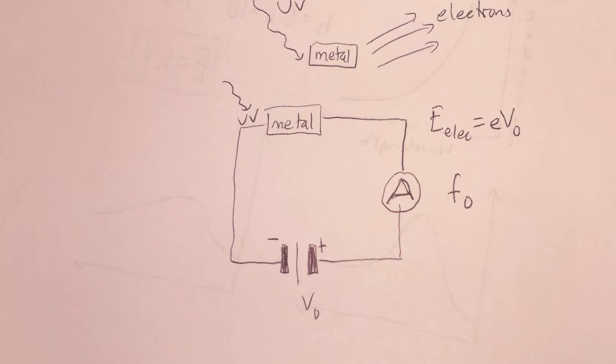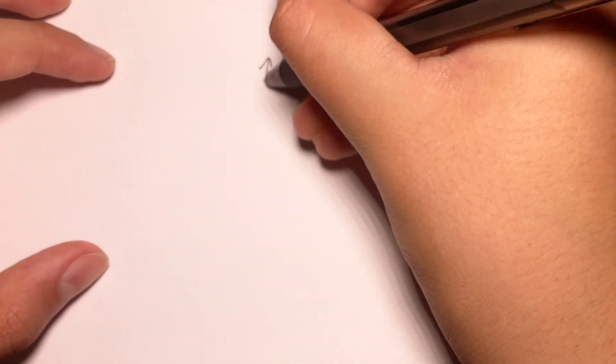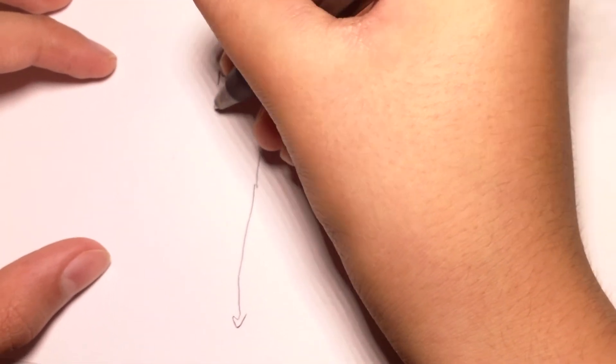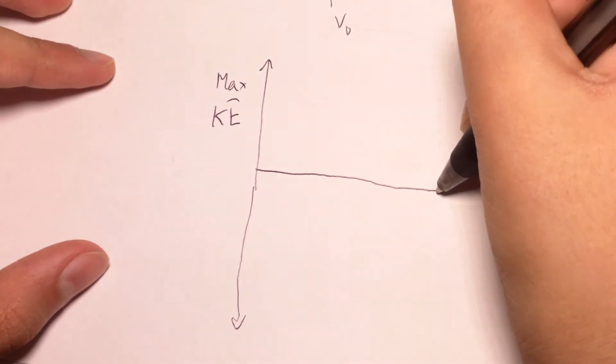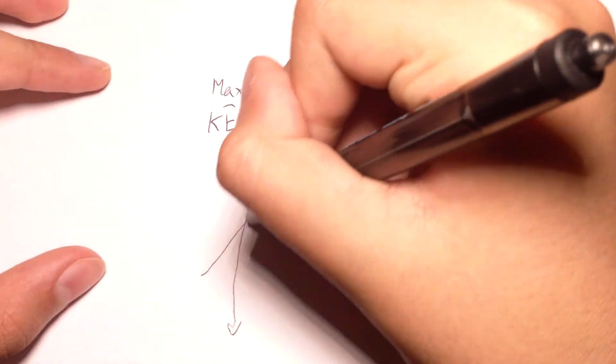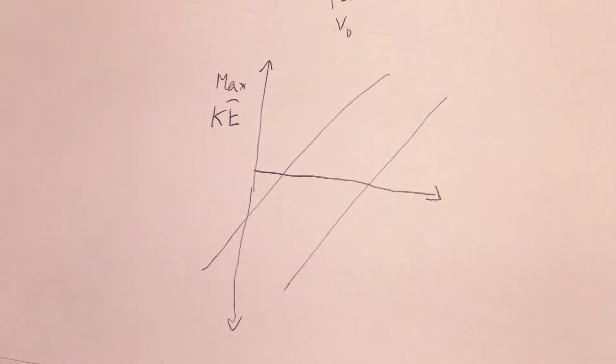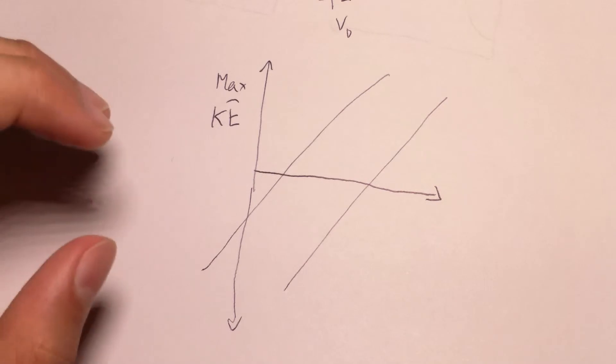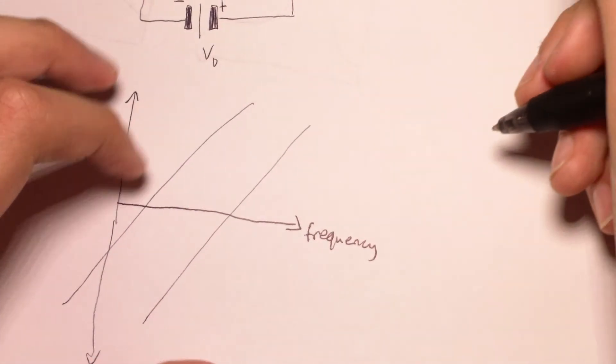And it kind of creates an elegant picture where if we graph the kinetic energy, the maximum kinetic energy of the electrons, max KE, and you'll find parallel lines. And each line is a different metal. So it's an intrinsic property of the metal. And the slope is, oh yeah, by the way, incidentally, this is graphing against frequency.